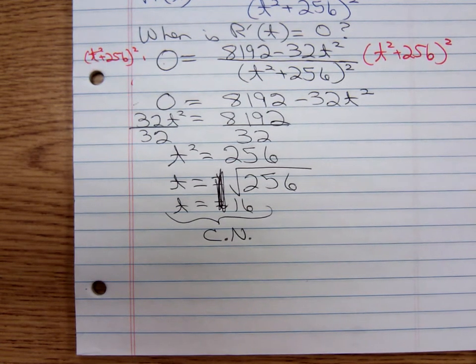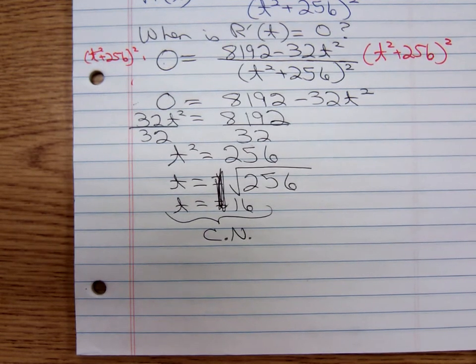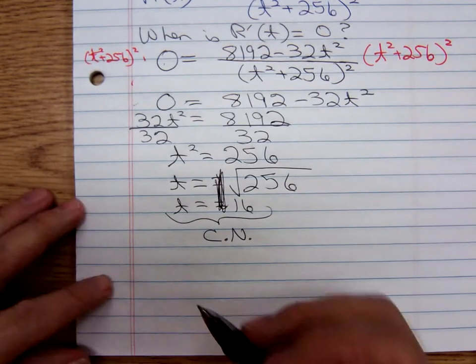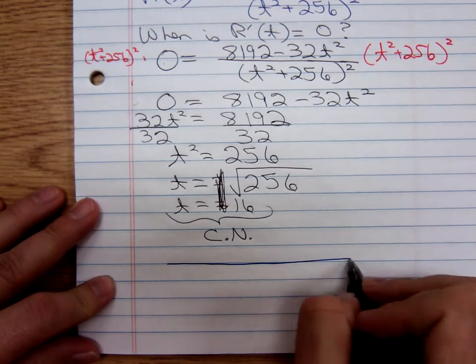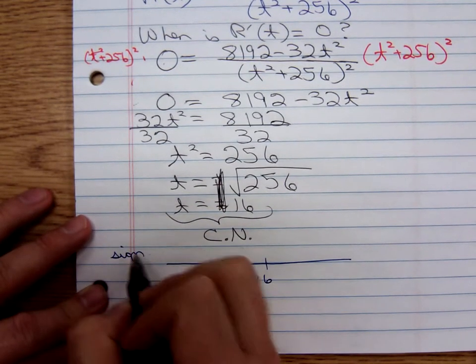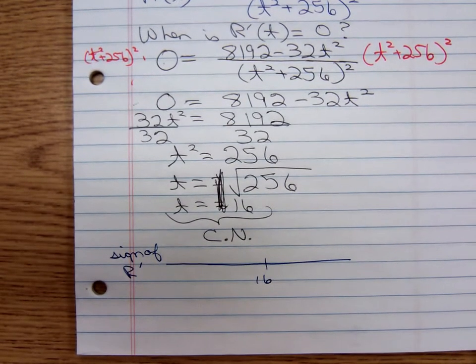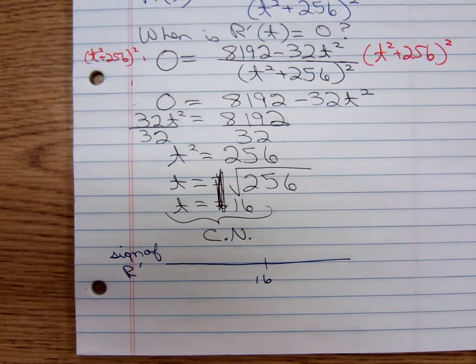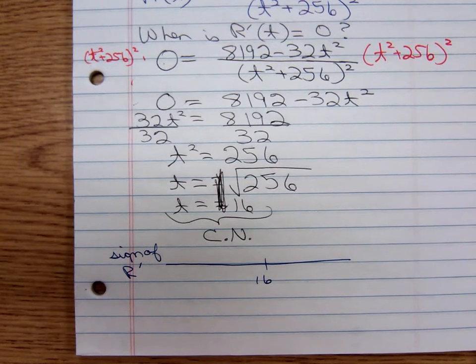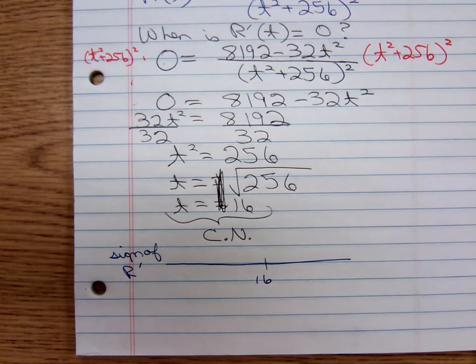So if I had to guess, that's the only critical number. If there's going to be a maximum, then it has to occur there at 16. So let's see if we're right. Let's show that 16 is a maximum. We're looking at the sign of R'(t). Oh, and I sort of jumped the gun. We have a fraction here. We have to ask ourselves: is the fraction ever undefined? I jumped the gun and just went straight to the number line because I know what's going to happen.